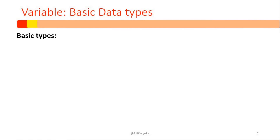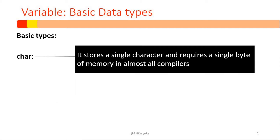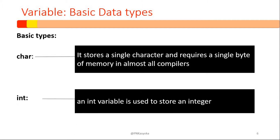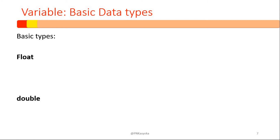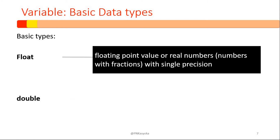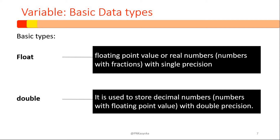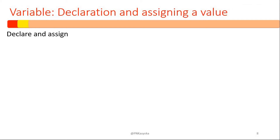When we declare variables, we must declare them together with the data type. We have basic data types such as char, which stores a single character and requires a single byte of memory in almost all computers. We have the integer, int, used to store an integer value. Then we have the float and the double. The float stores all real numbers with single precision, while the double stores decimal numbers with double precision.